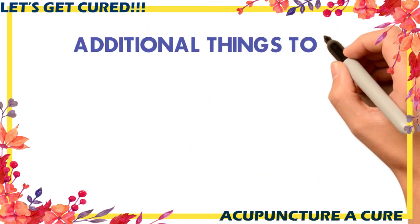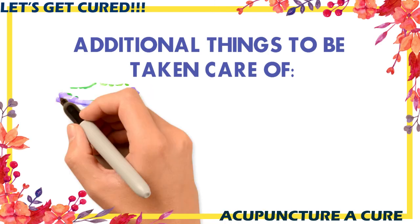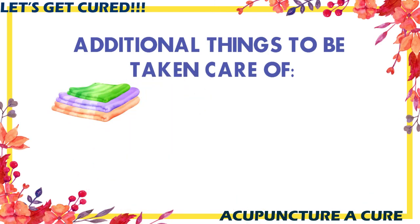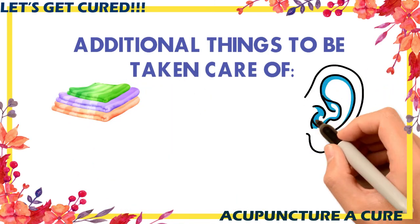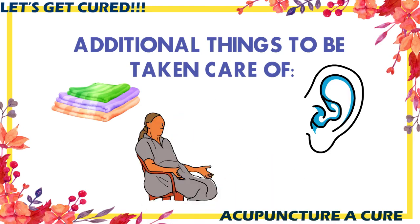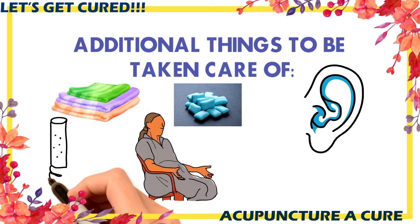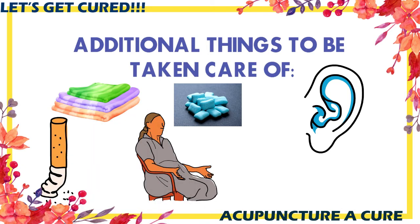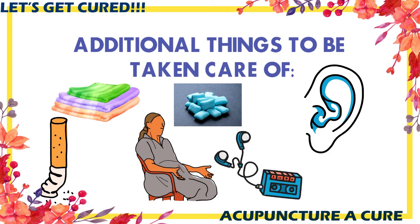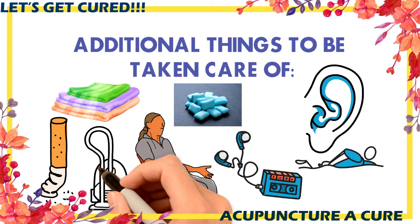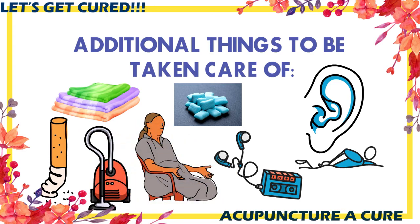Additional things to take care of: apply a cold washcloth to the ear, avoid getting the ear wet, sit upright to help relieve ear pressure, chew gum to help relieve pressure, and avoid smoking. If you want to quit smoking, check our video 'How to Quit Smoking' provided in the description box. Keep foreign objects out of the ear, dry the ears after swimming or bathing, and avoid allergy triggers such as dust.